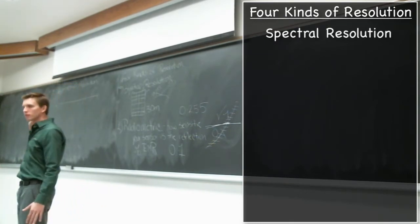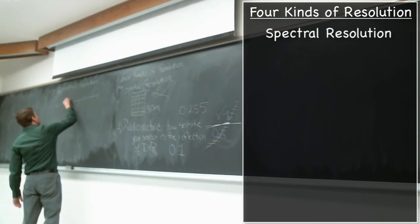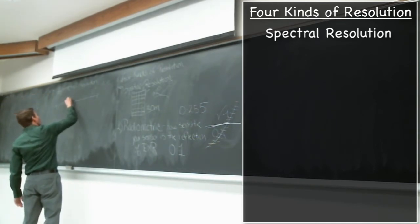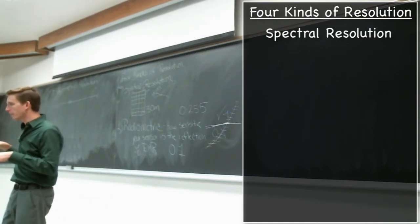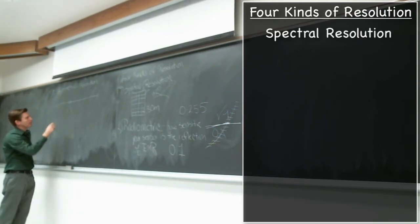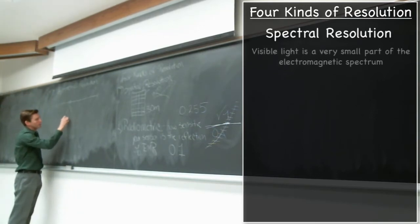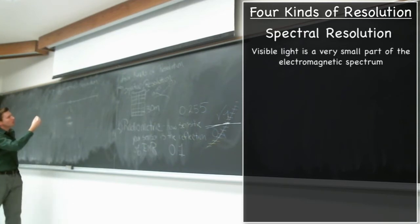You know that wherever we are, there's a relatively thin amount of the spectrum that we see. This right here is, just for the sake of example, we'll say this right here is the visible light that we see.